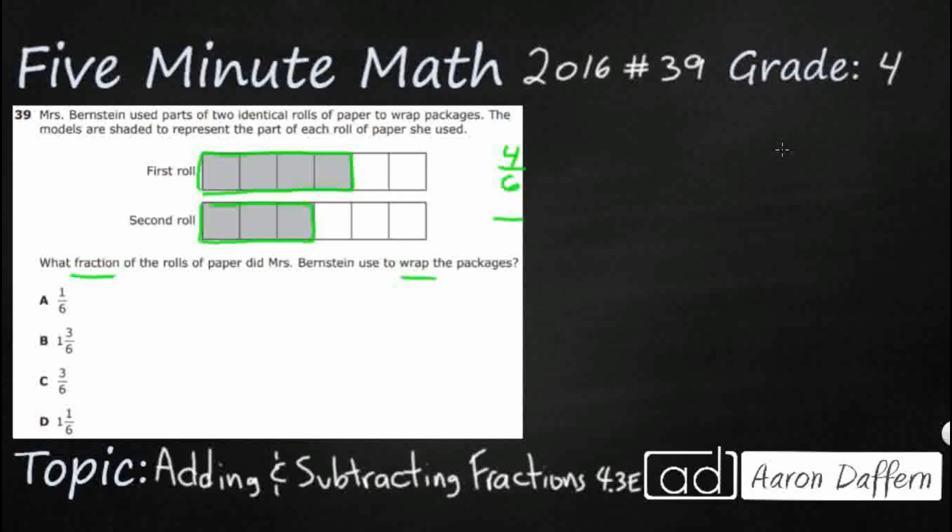Let's do the same thing for this bottom roll. 1, 2, 3. And then you've got 3 out of 6.